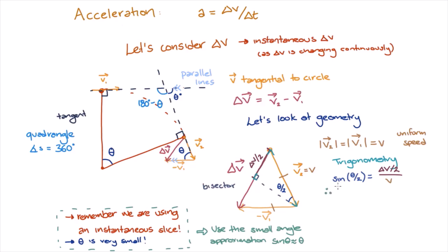So plugging this back in, we find theta on 2 is equal to delta v on 2 divided by v. Rearranging, we get the change in velocity delta v is equal to v times theta. Therefore, we have the first ingredient for our acceleration.